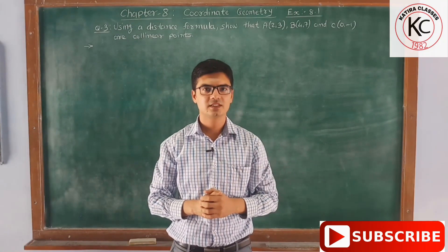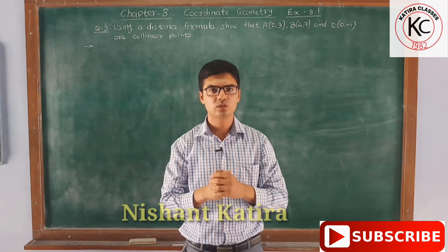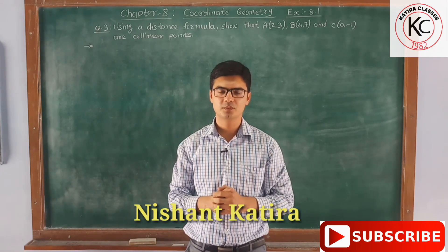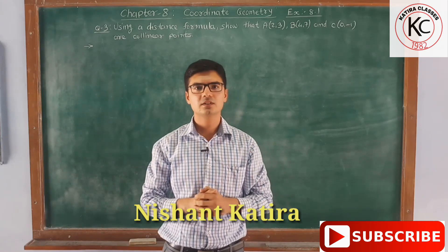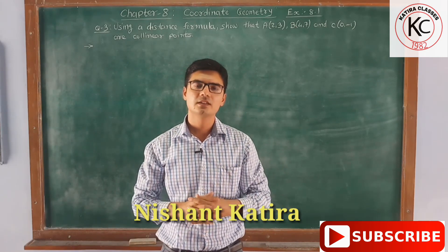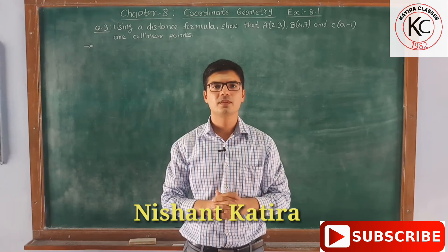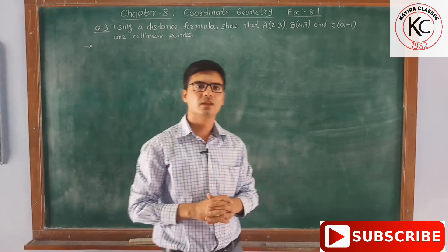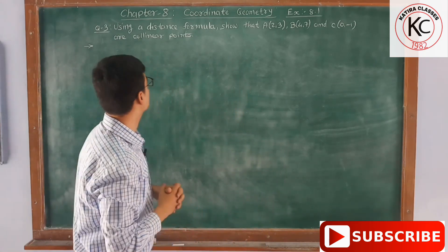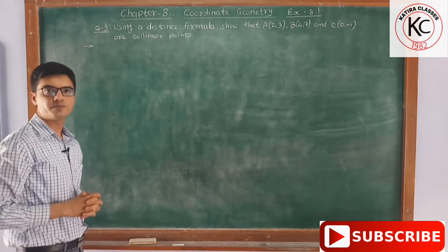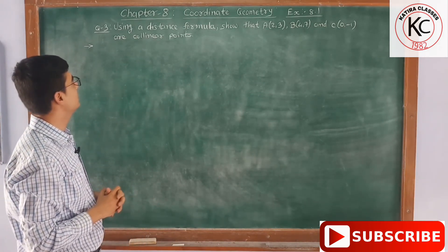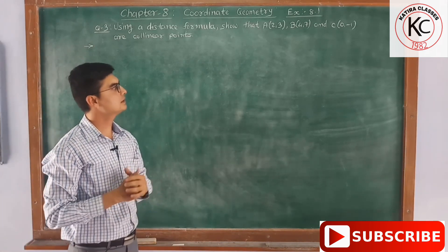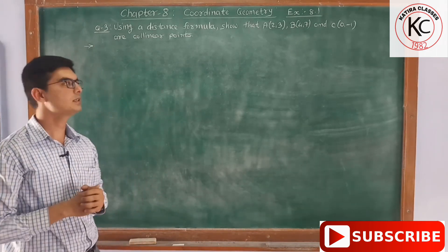Hello friends, I am Nishan Kathira and today we are going to learn chapter number eight, coordinate geometry. In earlier videos we had studied question number one and two of exercise 8.1. Now in this video we will study question number three. Question three is: using the distance formula, show that points A, B and C are collinear points.